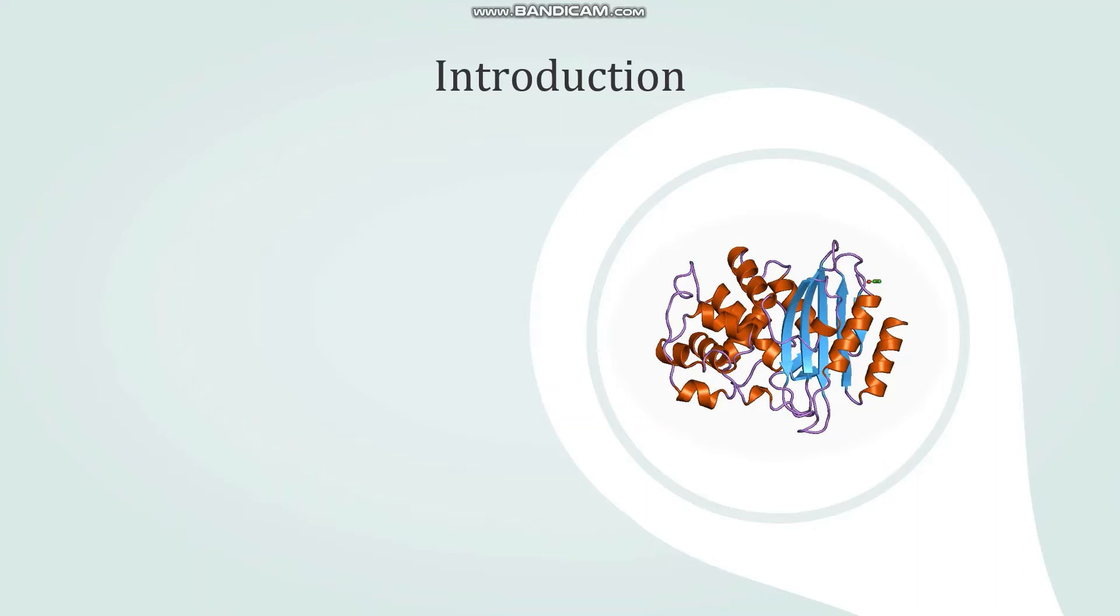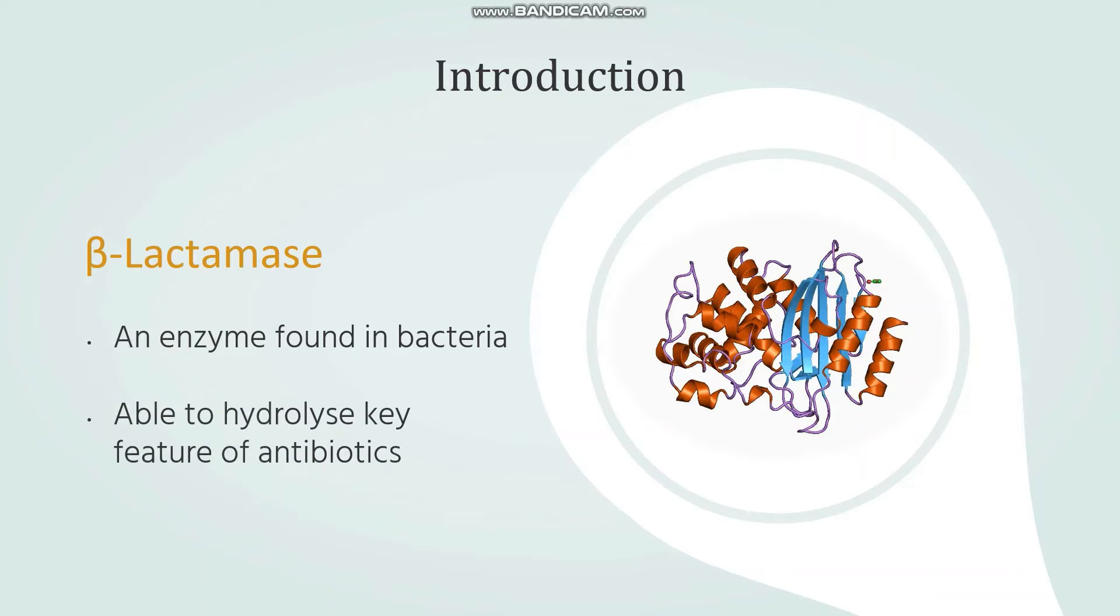What exactly is beta-lactamase? It is an enzyme that is found in bacteria, especially gram-negative bacteria. This enzyme is able to hydrolyze one class of the most commonly used antibiotics. This poses a huge challenge for the biotechnology and pharmaceutical industries as this resistance is spreading quickly amongst the bacteria.